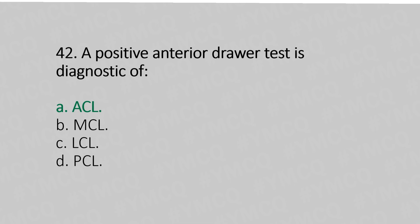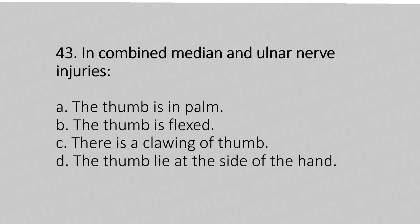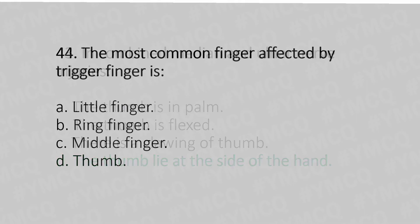Now let's move to question number 43. In combined median and ulnar nerve injury: option A, the thumb is in the palm; option B, the thumb is flexed; option C, there is clawing of the thumb; option D, the thumb lies at the side of the hand. The answer is option D: the thumb lies at the side of the hand.